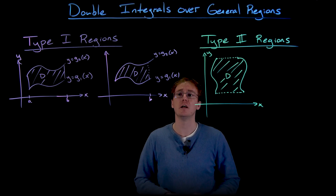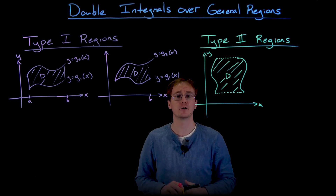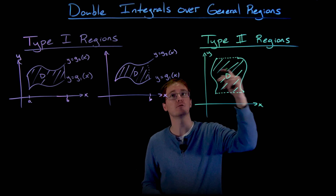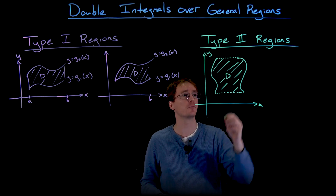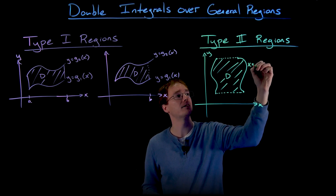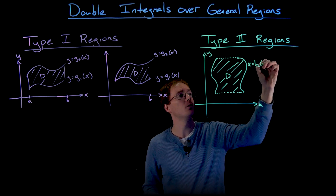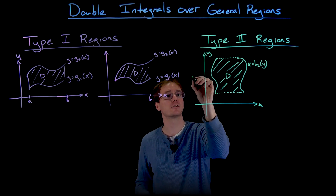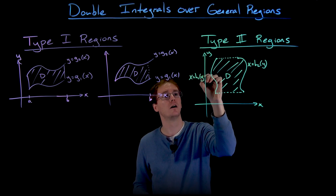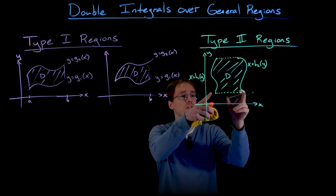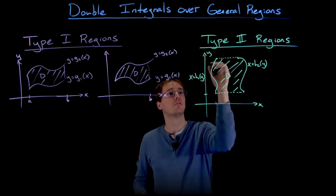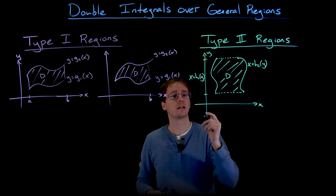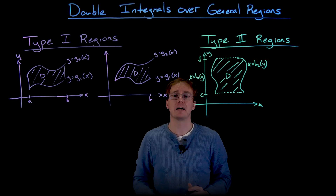Since we're using a rightmost and leftmost curve, the equations for those curves won't be written as y as a function of x — we'll instead write them as x as a function of y. The rightmost curve is assigned an equation like x equals h2 of y, and the leftmost curve has an equation like x equals h1 of y. We then specify the y values for which the region applies: a lower value c and an upper value d.